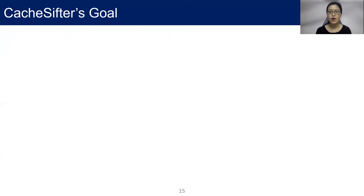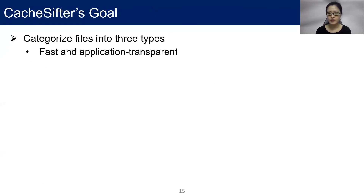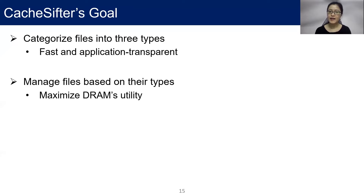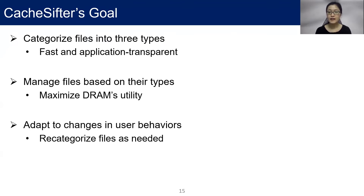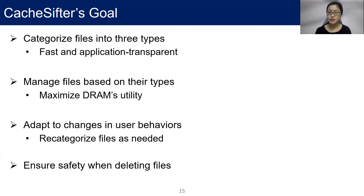Here is the goal of CacheSifter. We need to categorize files into three types. This operation should be fast and application transparent. Then we need to manage cache files based on their types, with the goal to maximize DRAM utility, especially when there are multiple applications. Moreover, CacheSifter should adapt to changes in user behaviors and recategorize files as needed. Finally, CacheSifter should ensure safety when deleting cache files.